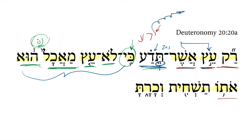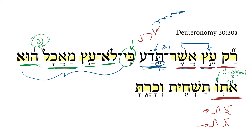Next, we get the direct object marker fronted — 'oto.' A quick reminder that 'et' and 'et' look the same: one is the direct object marker and one is the 'with' preposition. When you put pronominal suffixes on these, the direct object marker gets an 'o' vowel. So if you can think of the 'o' vowel for the direct object marker, that can be helpful. Here, the direct object marker is fronted: it — namely, that tree that is not good for food — it, you shall destroy and you shall cut down.